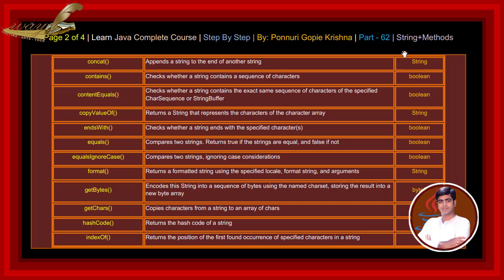format method returns a formatted string using a specified locale, format string, and arguments. getBytes method encodes the string into a sequence of bytes using the named character set, storing the result into a new byte array. getChars method copies characters from a string to an array of characters. hashCode method returns a hash code of a string.